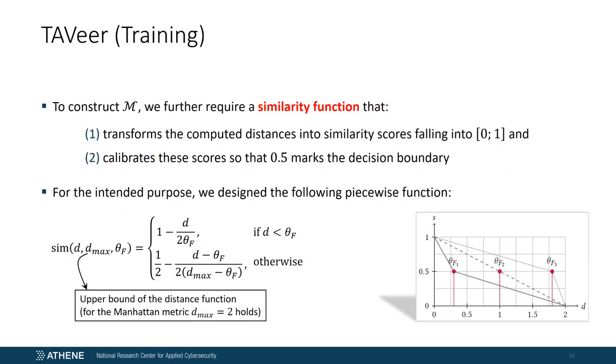In order to construct a model, we further need a similarity function that will help us to estimate the quality of the generated ensembles in the next step. The function must satisfy two requirements: transforming the distances into values between 0 and 1, and calibrating them in such a way that 0.5 represents the decision boundary. For the intended purpose, we designed a simple piecewise function, which is defined below and illustrated on the right. The function takes three arguments: D the distance, D_max the upper bound of the distance function, so for the Manhattan metric that would be 2 which can be shown easily, and theta_F the threshold for the considered feature category F. Note that any other suitable similarity function can be used instead, as long as both requirements are met.